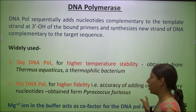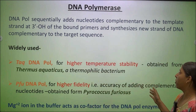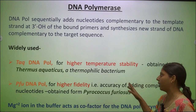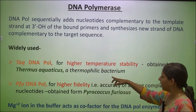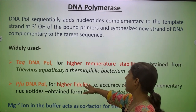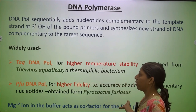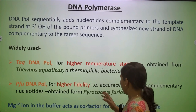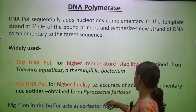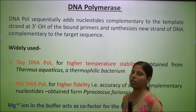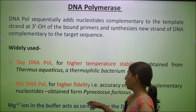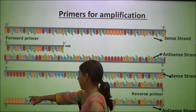During the initial step, DNA denaturation occurs at 94 degrees centigrade. In general lab practice we use Taq DNA polymerase, obtained from Thermus aquaticus, a thermophilic bacterium. The second type is Pfu DNA polymerase, obtained from the bacterium Pyrococcus. Pfu is known for higher fidelity, meaning if you are cloning DNA and maximum accuracy is needed, Pfu DNA polymerase is used.